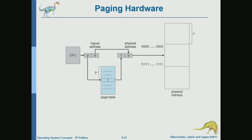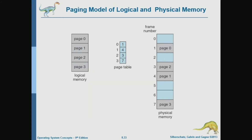Now we have a couple of good examples showing how we map pages into frames. This is logical memory — the logical address space of a process consisting of 4 pages: 0, 1, 2, 3. We are mapping this into physical memory that has 8 frames. The page table does the translation from page number to frame number.